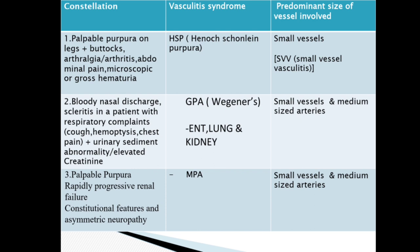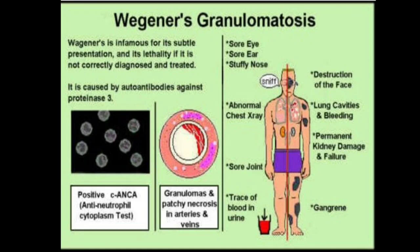In GPA, small vessels and medium size arteries are involved. Next, coming to palpable purpura, rapidly progressive renal failure, constitutional features, and asymmetric neuropathy — this is MPA, Microscopic Polyangiitis. Small vessels and medium size arteries are involved here. Rapidly progressive renal failure is very characteristic, and they can also have pulmonary diffuse alveolar hemorrhage. Vasculitis is infamous for its subtle presentation and lethality if not correctly diagnosed and treated.